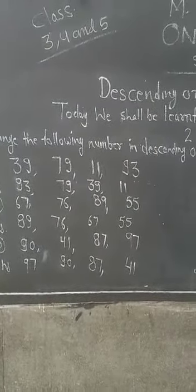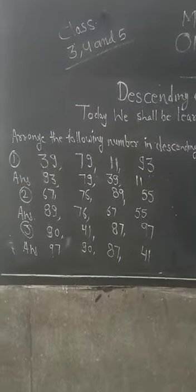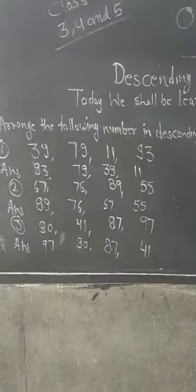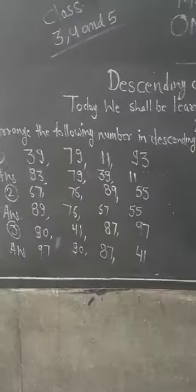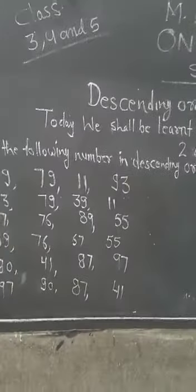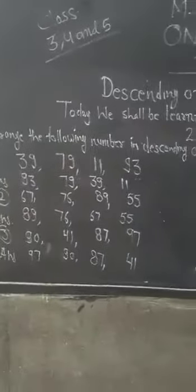79, 11, 93. Which number is greatest in these numbers? 93 is the greatest number. 93, उसके बाद से 79, then 39, and last and final 11. Second question: